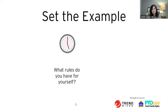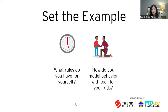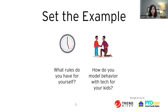In terms of setting the example, ask yourself: what do you do to separate work time from home time? Do you charge your phone next to your bed or in another room? Do you have your phone at the dinner table? It's going to be very difficult to expect of our children the things we're not doing ourselves — they will follow whatever it is we are doing.